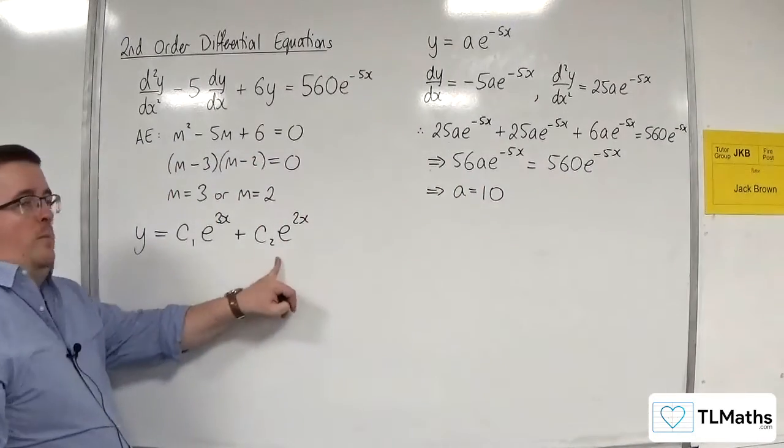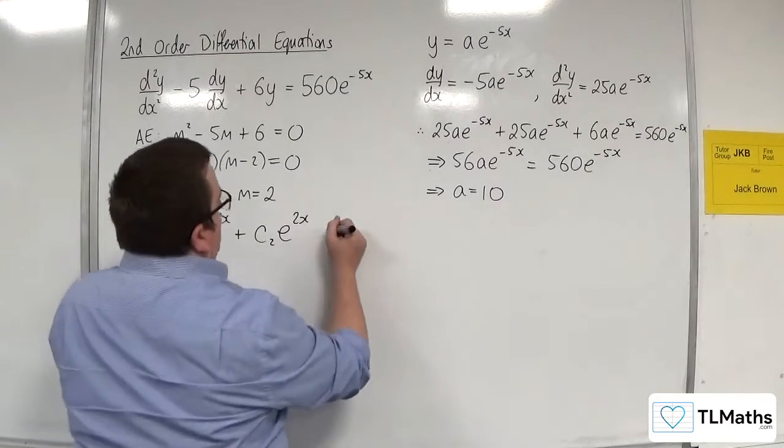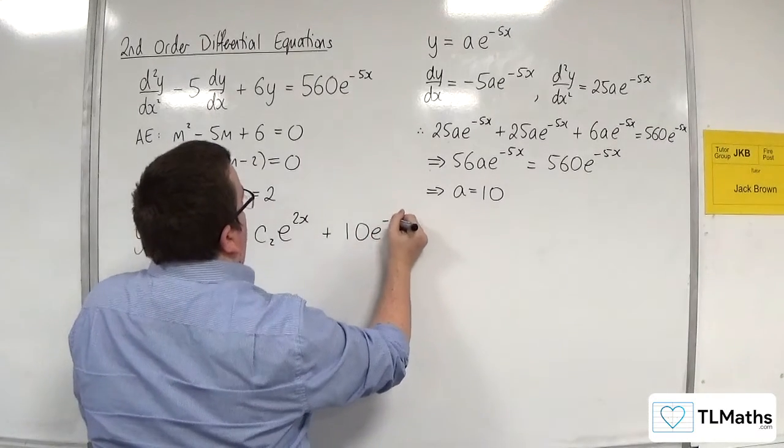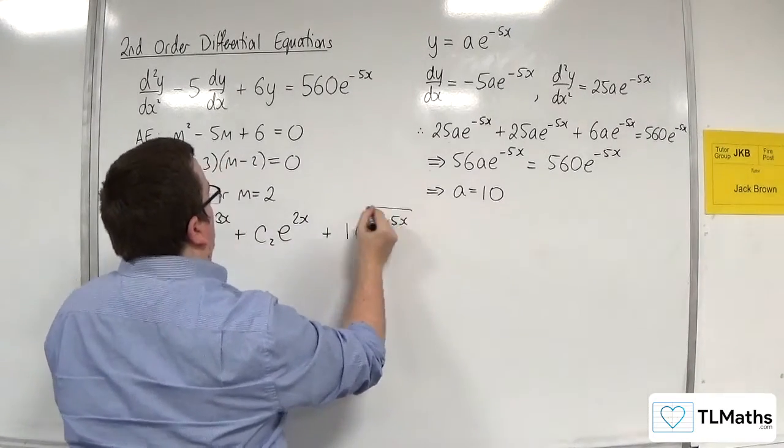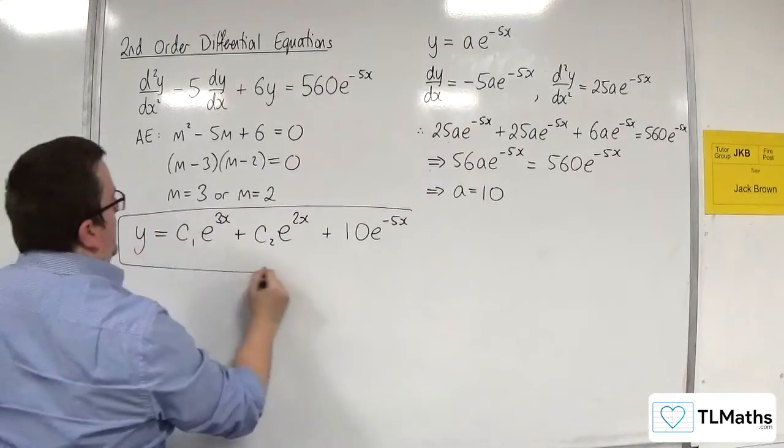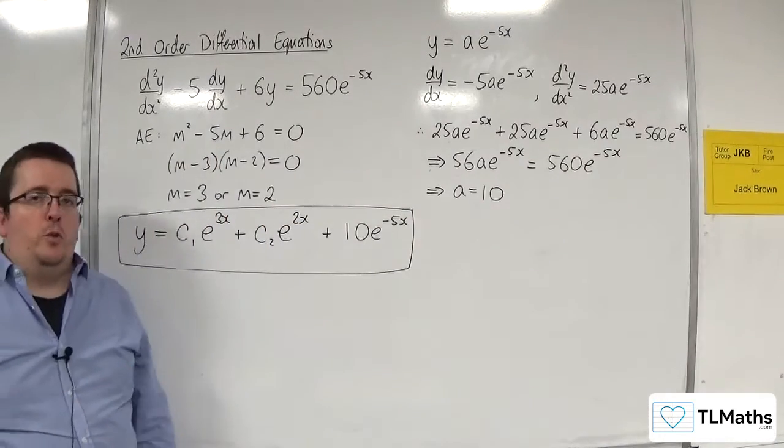So here's my complementary function. Here is my particular integral, 10 e to the minus 5x. And so that is the general solution to my differential equation.